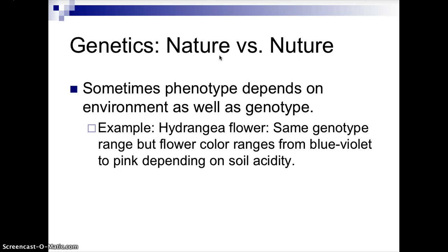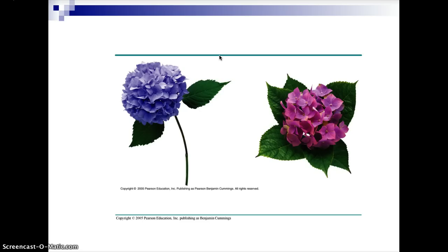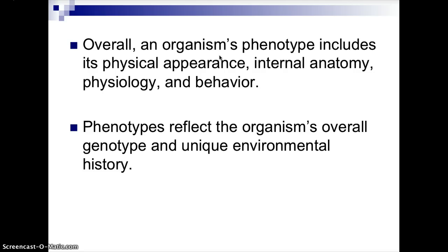An example of epigenetics would be hydrangea flowers. They have the same genotype range, but the phenotypic expression of flower color can range from blue-violet to pink depending on soil acidity. The blue-violet flower grows in more alkaline soil, while the pinkish flower grows in more acidic soil. So sometimes it's not just about genetics — you have to consider environmental conditions. Overall, an organism's phenotype includes its physical appearance, internal anatomy, physiology, and behavior, reflecting the organism's overall genotype and unique environmental history.